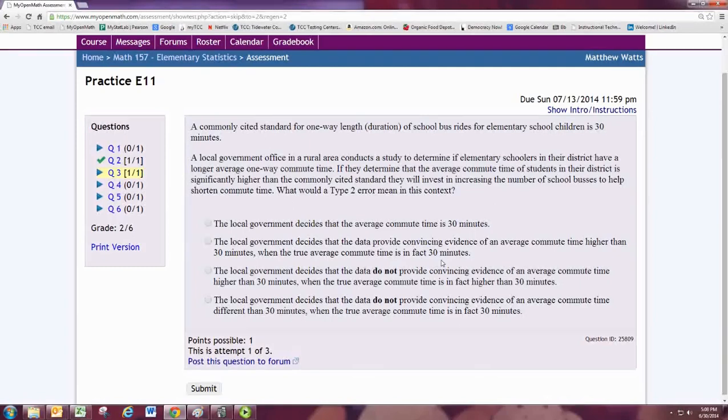The third choice, the local government decides that the data do not provide convincing evidence of an average commute time higher than 30 minutes, when the true average time is, in fact, higher than 30 minutes.